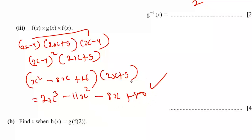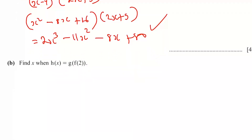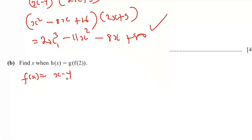Part B: find x when h(x) equals gf(2). First find f(2): f(x) equals x minus 4, so f(2) equals 2 minus 4, which is negative 2.